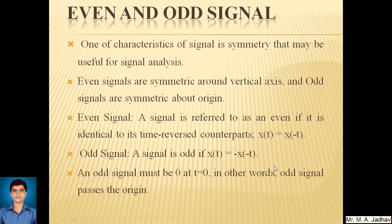Next, even and odd signal. One characteristic of a signal is symmetry that may be useful for signal analysis. Even signals are symmetric around vertical axis and odd signals are symmetric about origin. A signal is referred to as even if it is identical to its time reversed counterparts, so x of t equals x of minus t. A signal is odd if x of t equals minus x of minus t. An odd signal must be zero at t equals zero. In other words, odd signals pass through origin.